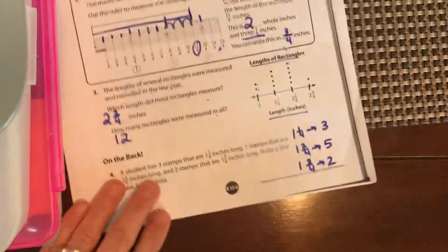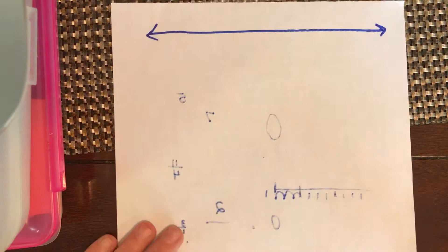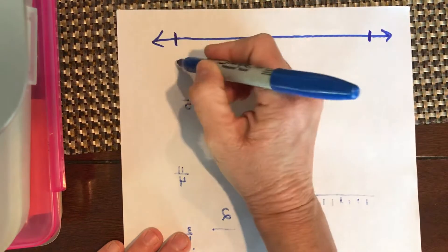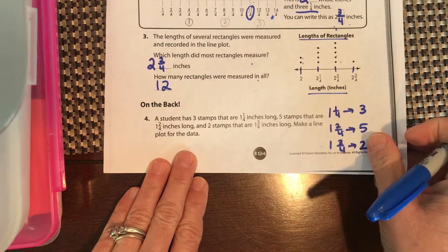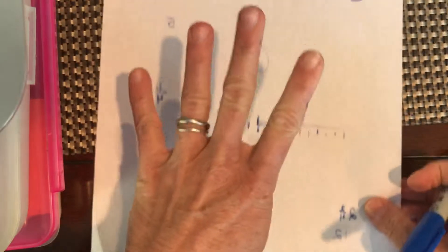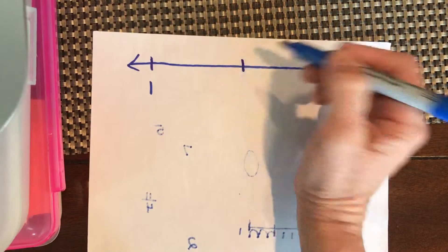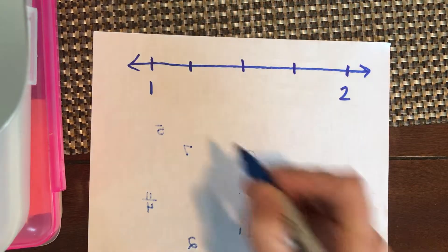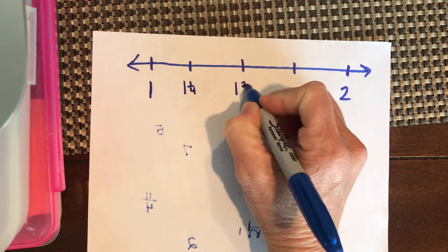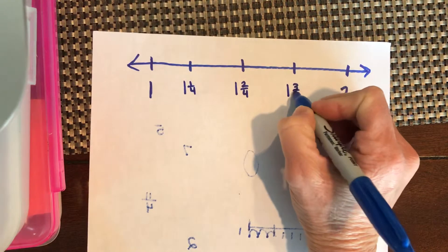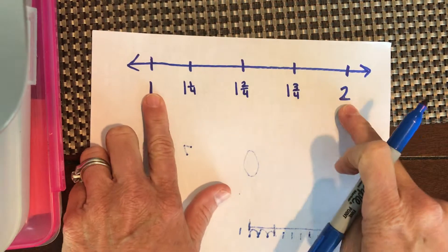We're plotting one and one-fourth, one and two-fourths, and one and three-fourths, so we put one and two on our number line. The denominator in all of these is fourths, so we divide that section into fourths by drawing three lines: one and one-fourth, one and two-fourths, one and three-fourths, then whole number two.